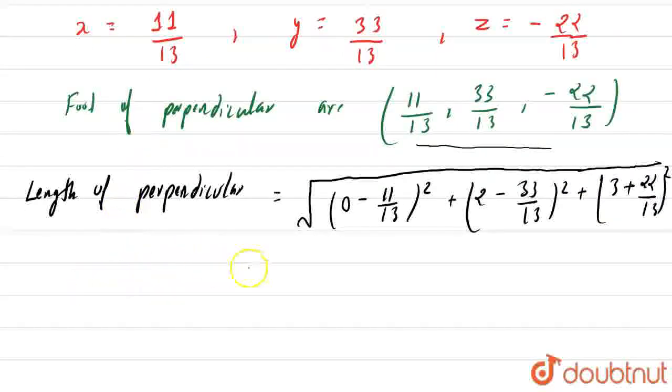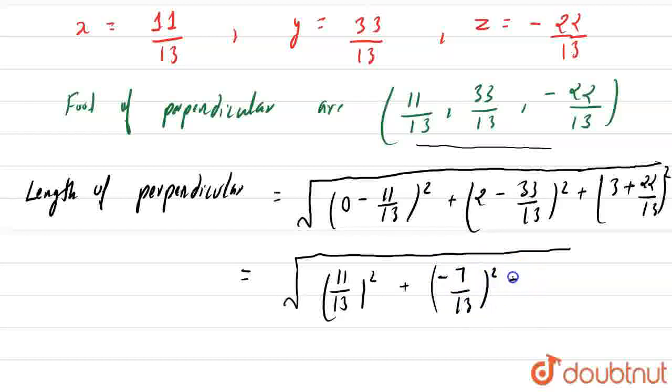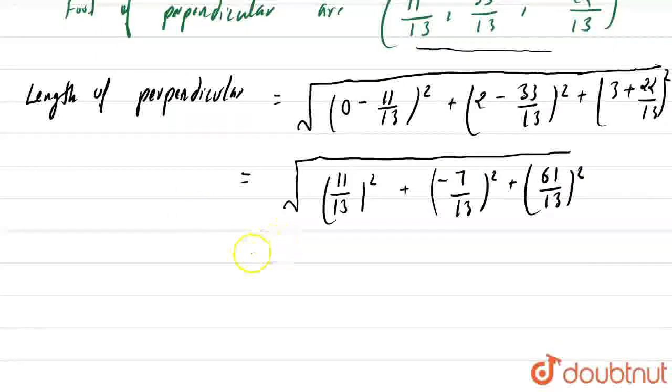So now we can also write it as √[(11/13)² + (-7/13)² + (61/13)²]. Now if we solve it, we get our value as 4.8 square units.